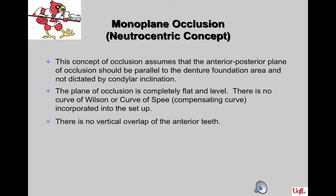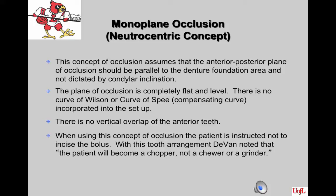With the neutrocentric concept, there is no vertical overlap of the anterior teeth for aesthetics. When the patient goes into protrusive, those teeth slide over one another. The patient is instructed not to incise the bolus of food coming forward, because the posteriors will lift off of the denture foundation. The patient becomes a chopper — just chomping food up and down — rather than going into lateral movements to incise or cut food.